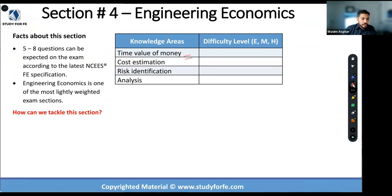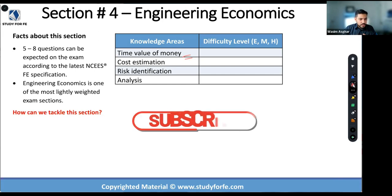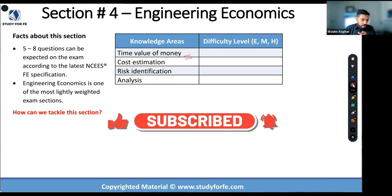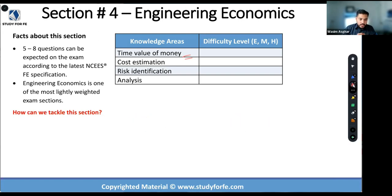Engineering economics: time value of money, going from present to future to annuity to gradient. Gradient cash flow diagrams were kind of interesting, and annuity cash flow diagrams were not that straightforward — especially when you have to collect different cash flows, bring them to present, then bring to future. Embedded in this is the interest rate: whether we need to compute the effective interest rate or divide the annual rate by the number of compounding periods. I'd rate this as medium difficulty.